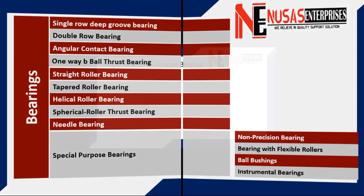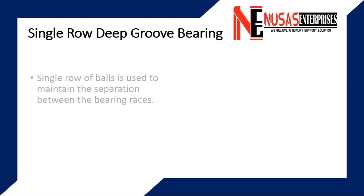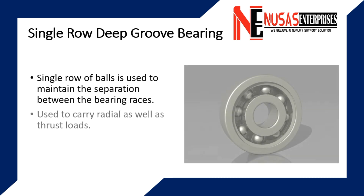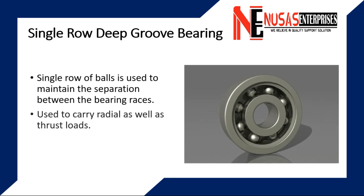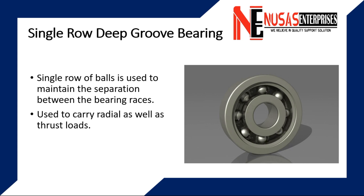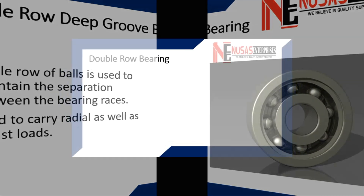Single row deep groove bearing: this is a type of ball bearing in which a single row of balls is used to maintain the separation between the bearing races. This type of bearing is used to carry radial as well as thrust loads.